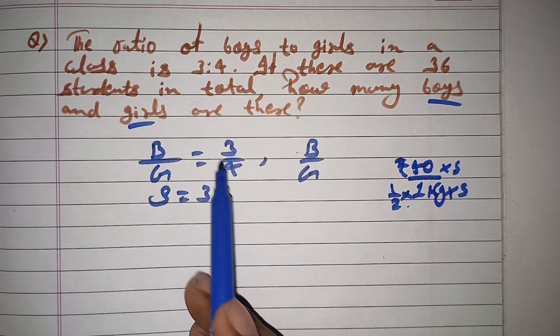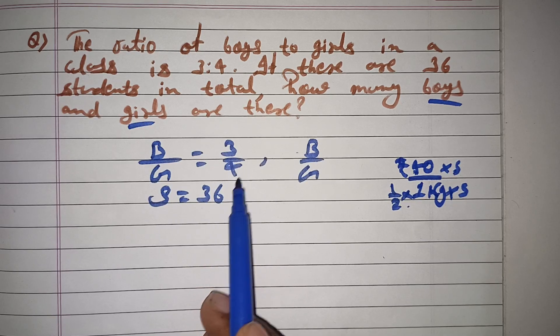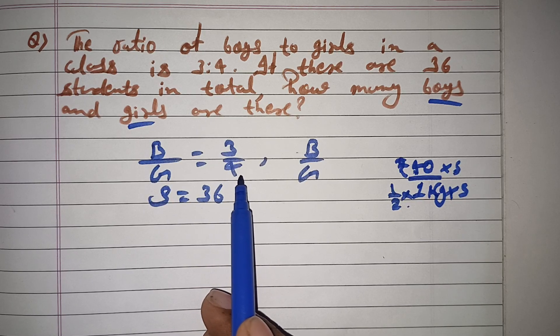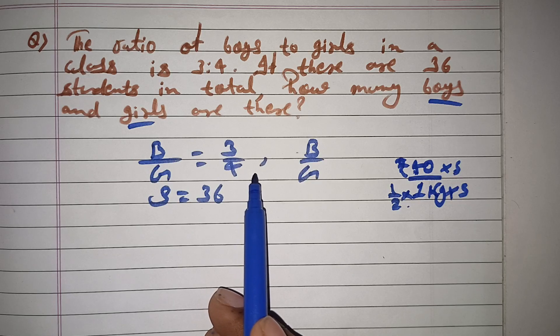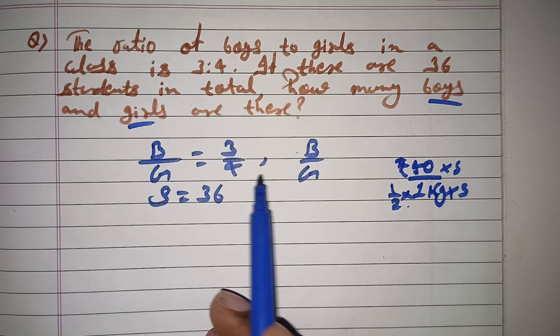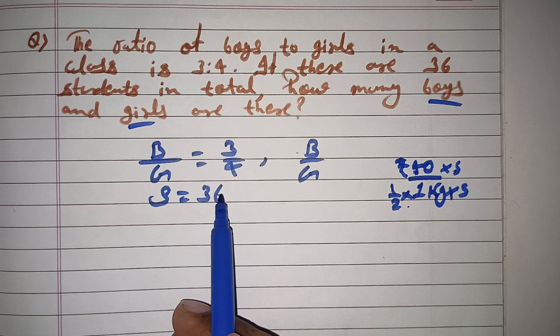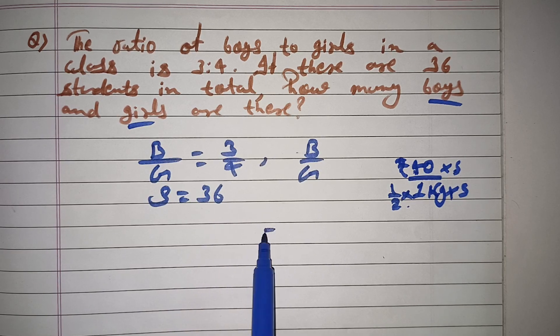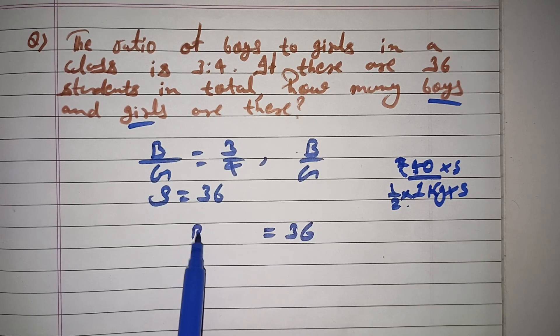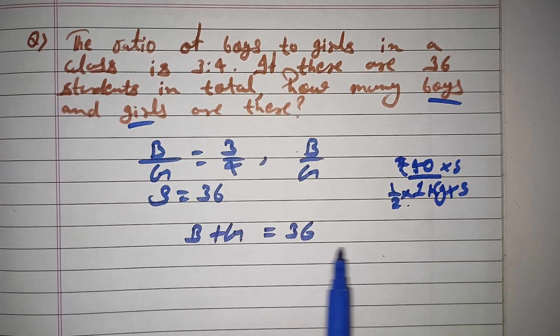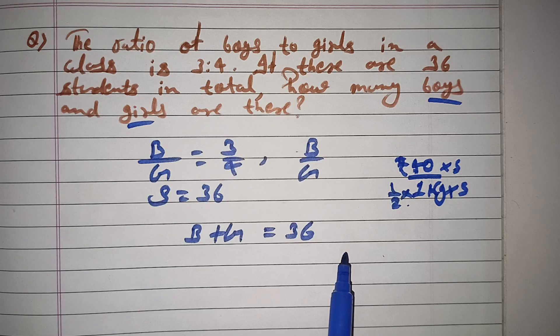If you say boys to girls, then you have 3 by 4. You will not know how many boys or girls there are. We need to find: B plus G, boys and girls, equals 36.